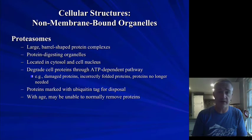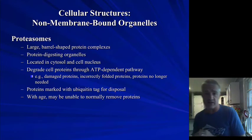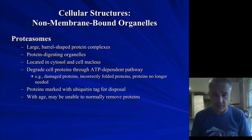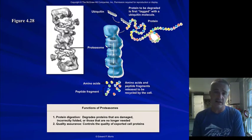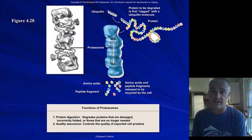The proteasome is the last non-membranous organelle on this list. It is something that we can target proteins to using a molecule called ubiquitin, and this organelle is going to digest and break down those proteins. You can think of it kind of like a garbage disposal — you put ubiquitin on these proteins, it targets them to the proteasome, which degrades and breaks them down into their fragments.